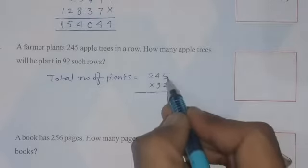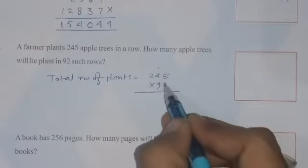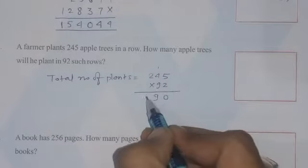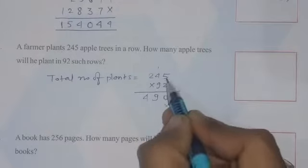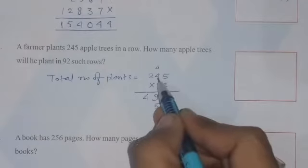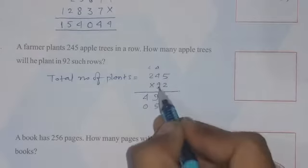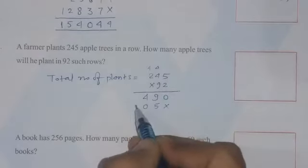So start multiplication. 2 times 5 is 10, so 0, carry over 1. 2 times 4 is 8 plus 1 is 9. 2 times 2 is 4. 9 times 5 is 45, so 5 here and 4 in carry. 9 times 4 is 36, 36 plus 4 is 40, so 0 here and 4 in carry. 9 times 2 is 18, 18 plus 4 is 22.